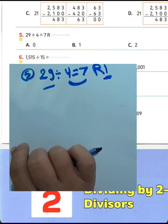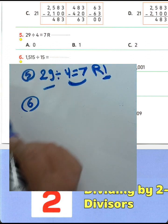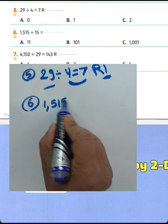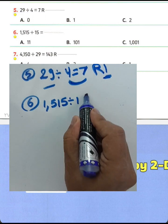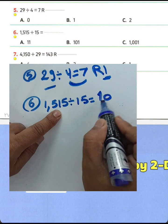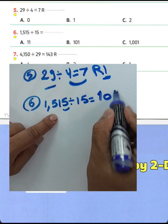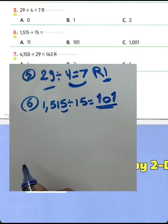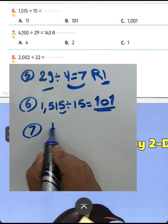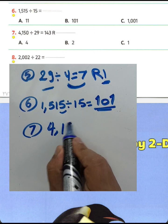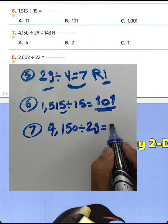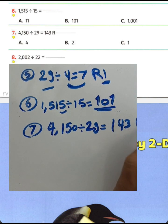Question number 6: 15 divided by 15 equals what? 15 divided by 15 equals 1. Any number divided by itself equals 1. The result is 1.